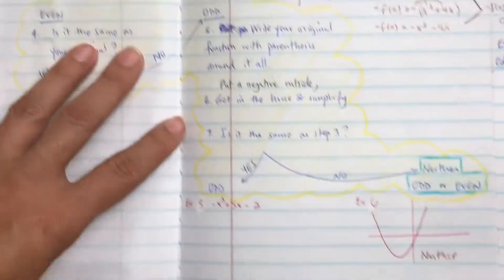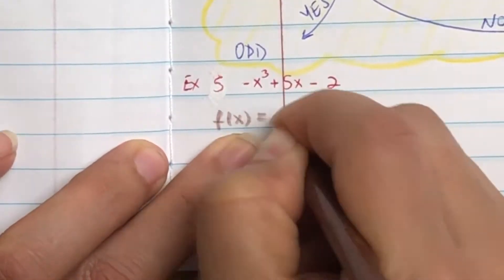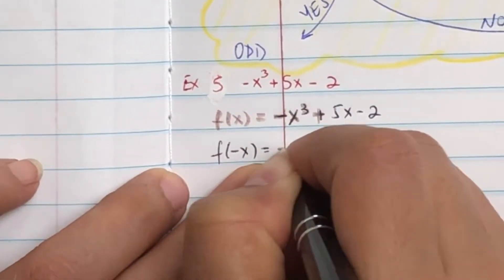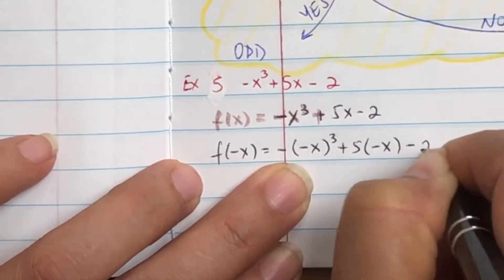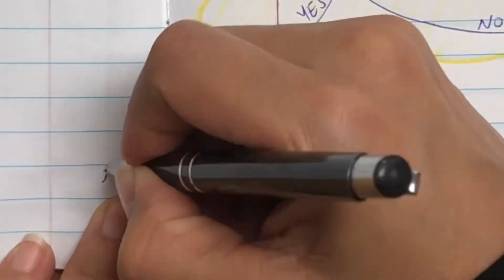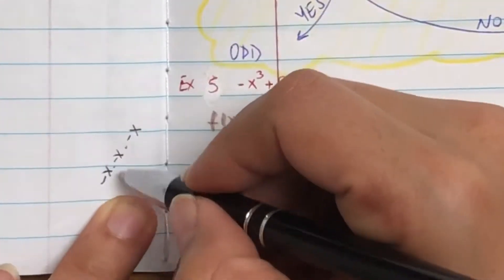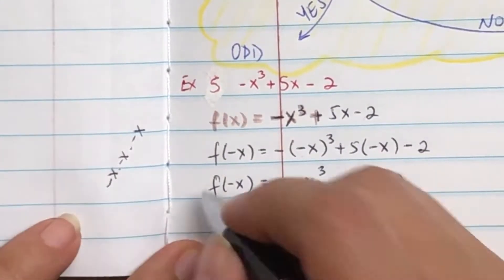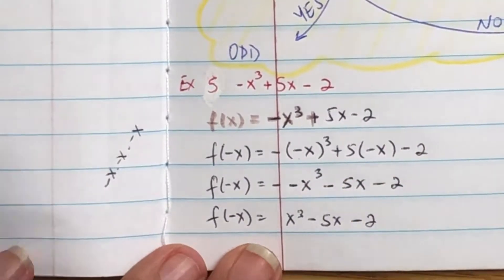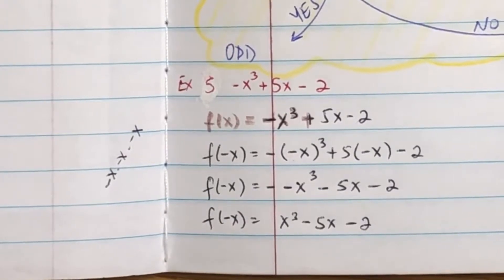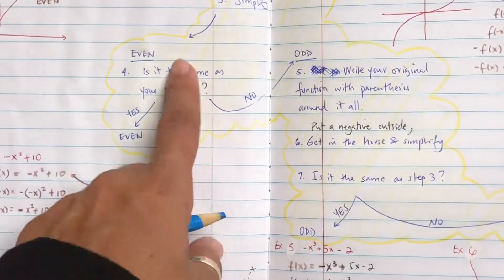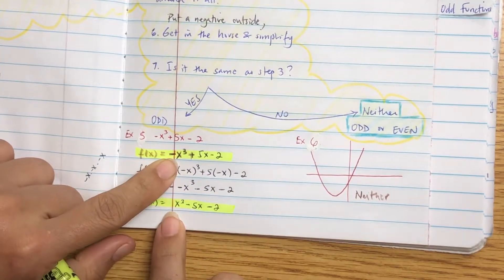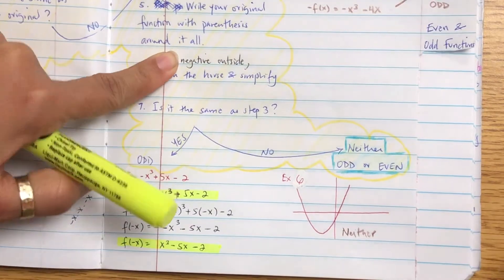Now let's look at a 'neither' example. Write down the original function, then find f(-x) by plugging in negative x for every x and simplifying. Negative x times negative x times negative x: negative times negative is positive, times another negative is negative — so negative x cubed. Then positive and negative gives a negative term, so we simplify that. Now compare: are the original f(x) and f(-x) the same? No, because there's a negative outside the first one.